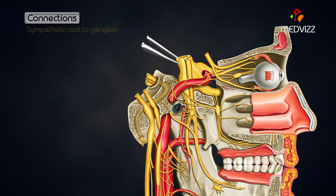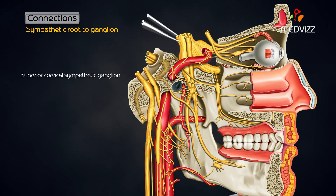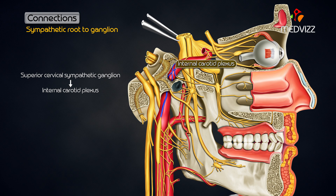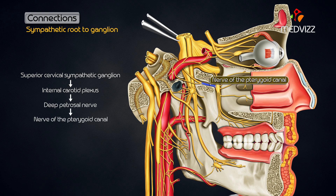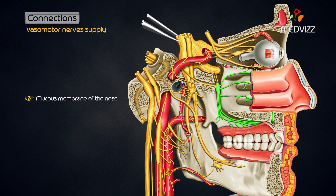The sympathetic root is also derived from the nerve of the pterygoid canal. It contains postganglionic fibers arising in the superior cervical sympathetic ganglion, which pass through the internal carotid plexus, the deep petrosal nerve, and the nerve to the pterygoid canal to reach the ganglion. The fibers pass through the ganglion without relay and supply vasomotor nerves to the mucous membrane of the nose, the paranasal sinuses, the palate and the nasopharynx.